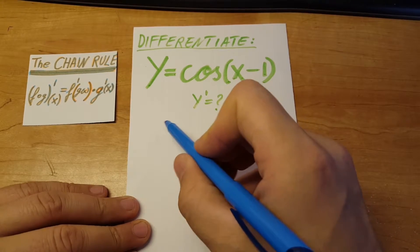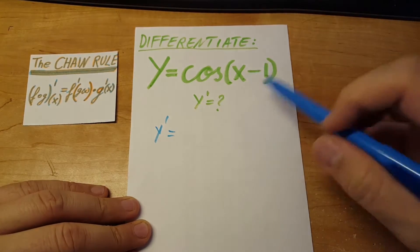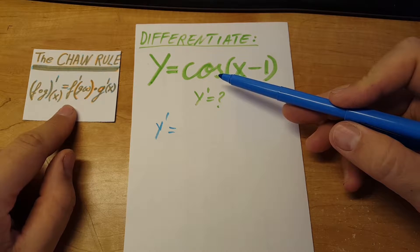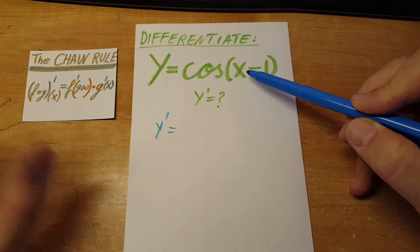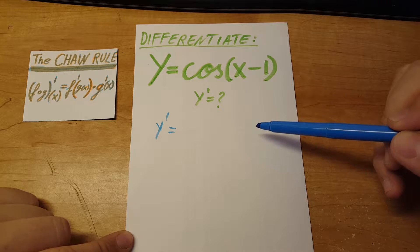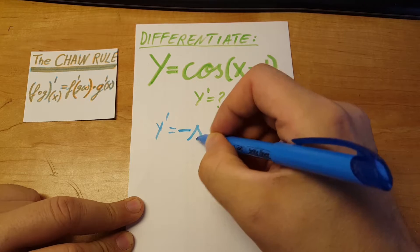So y' equals—we're going to use the chain rule. X minus 1 is the argument; we'll leave it alone. We'll just take care of the cosine first, so the derivative of cosine will be negative sine.